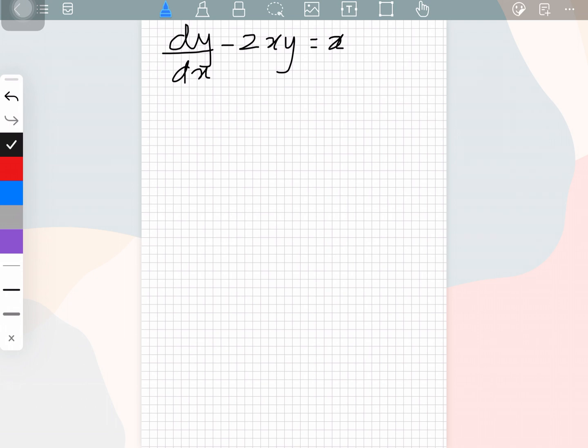First of all what I'll do is send this term to the right hand side. So what we can write it as is dy over dx is equal to x plus 2xy.